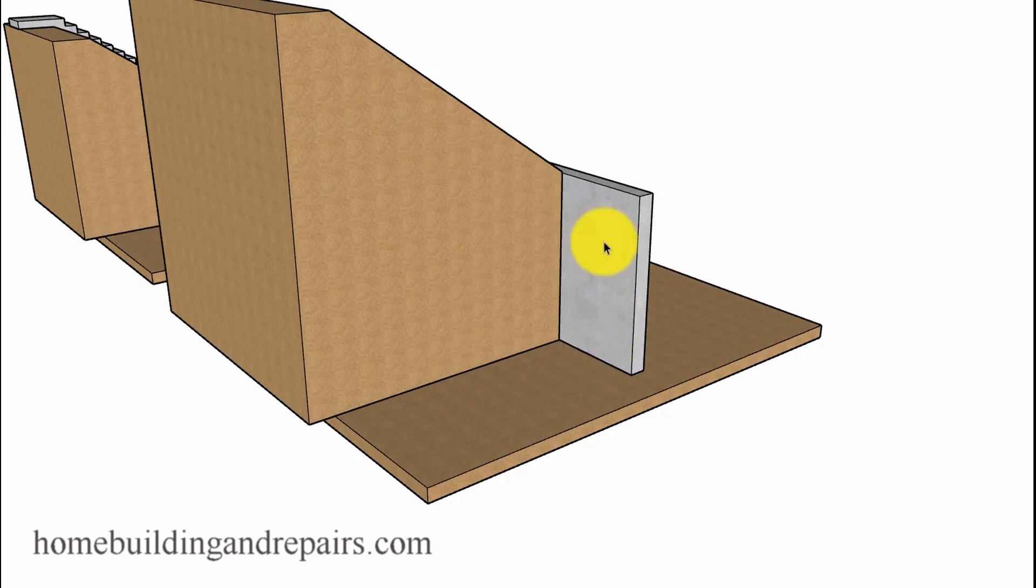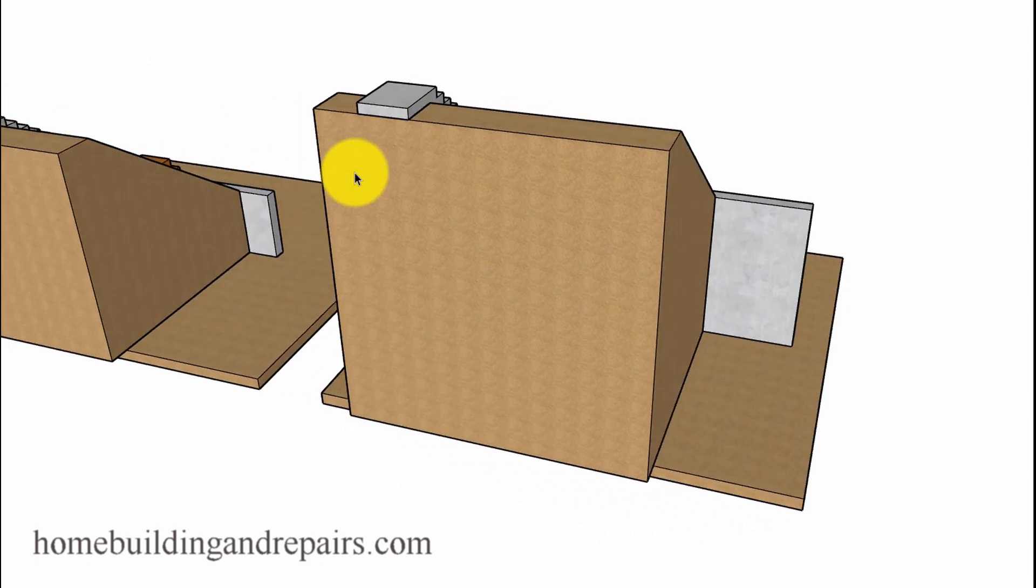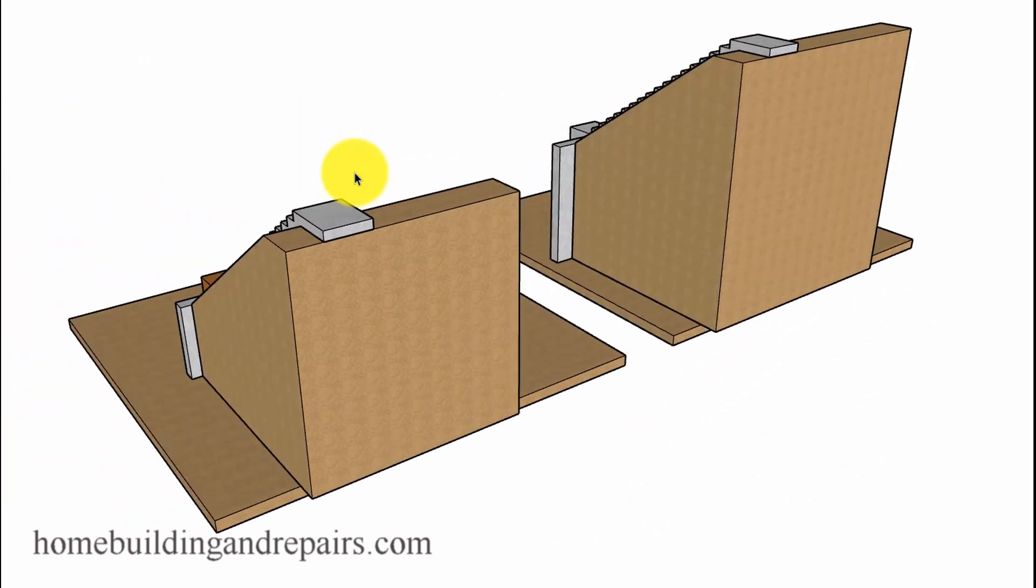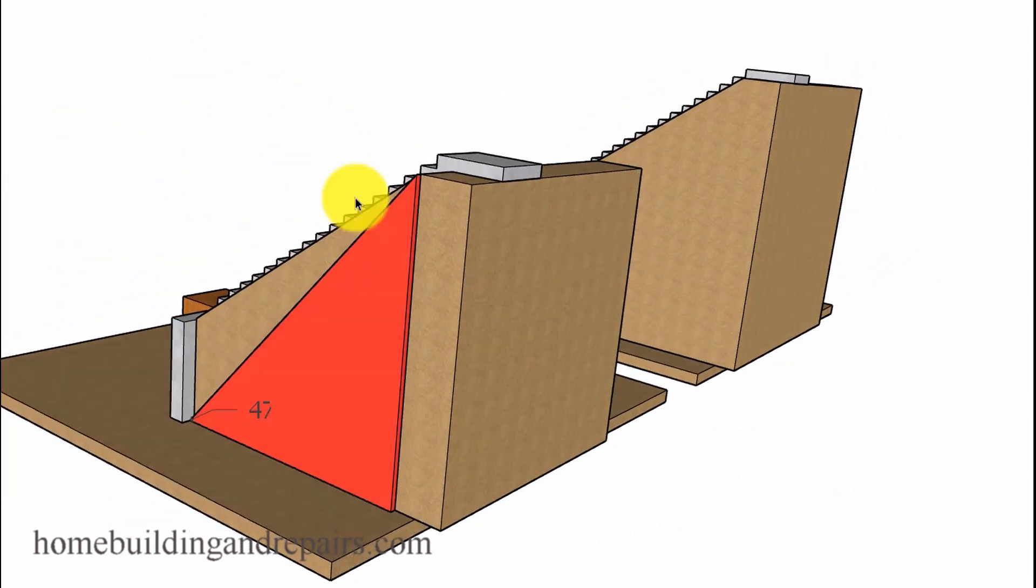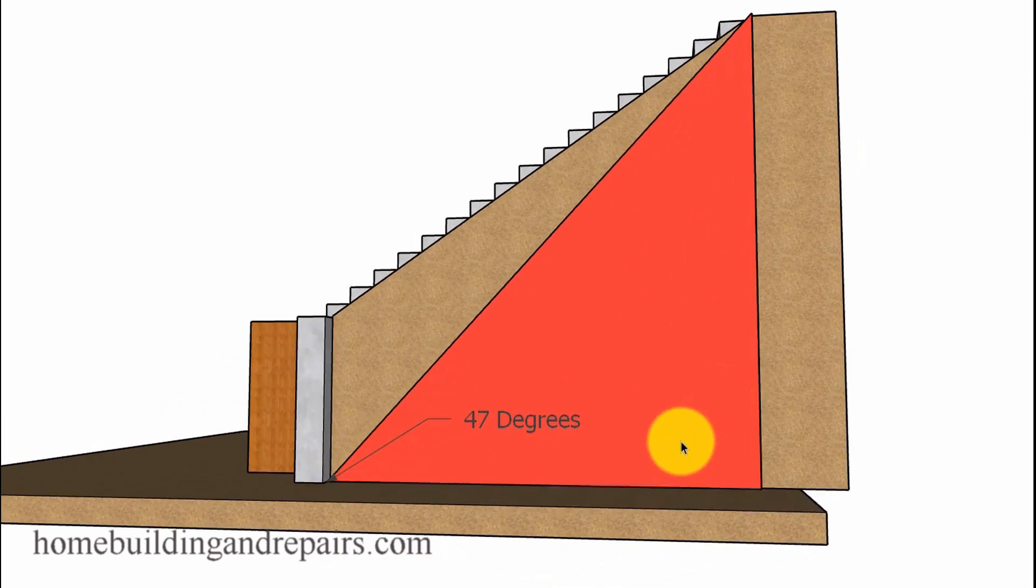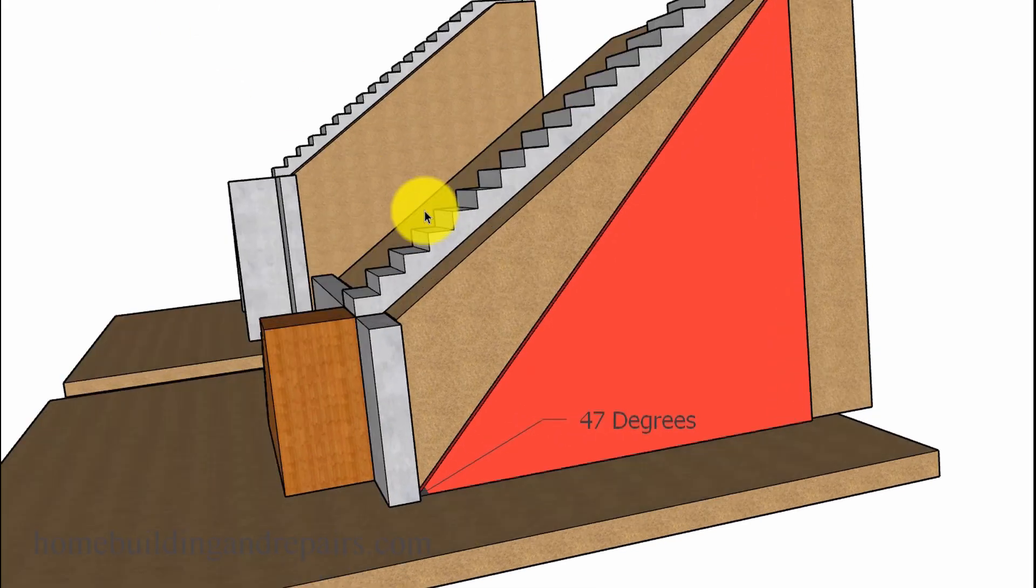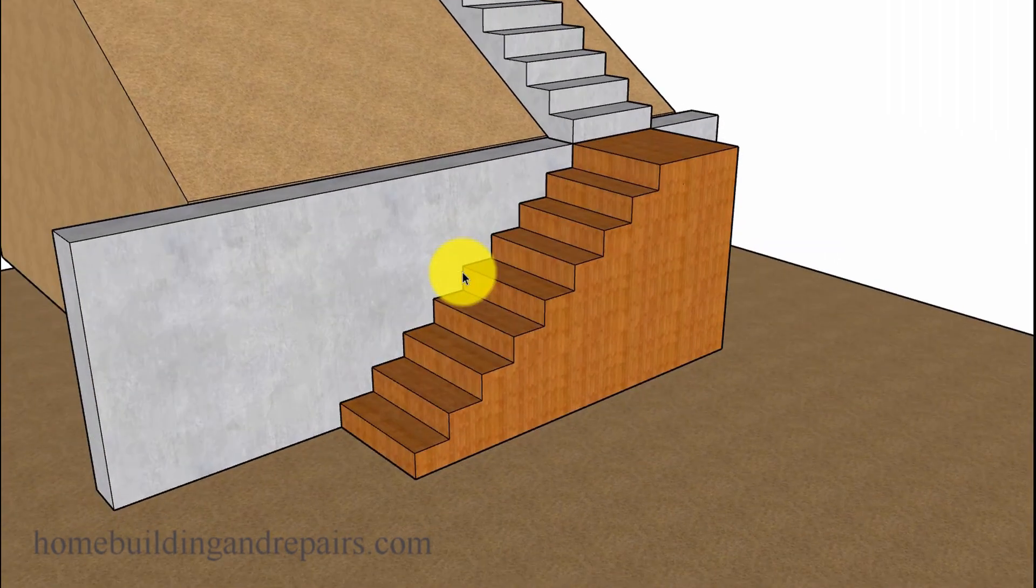The retaining wall height and location is going to be critical to your design. Let's just go ahead and start out with an angle here, 47 degrees. That's a steep slope and this area here is going to get backfilled if you did have something like this.